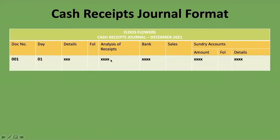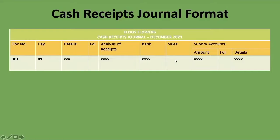Then you've got the analysis of receipts column, where you record all cash received during that particular day. The next column is the bank column — you put the amounts from the analysis of receipts there. If you received two amounts on the same day, you put them both under analysis of receipts, add them together, and put the total under the bank column. If it's just one transaction, the same amount appears in both columns.